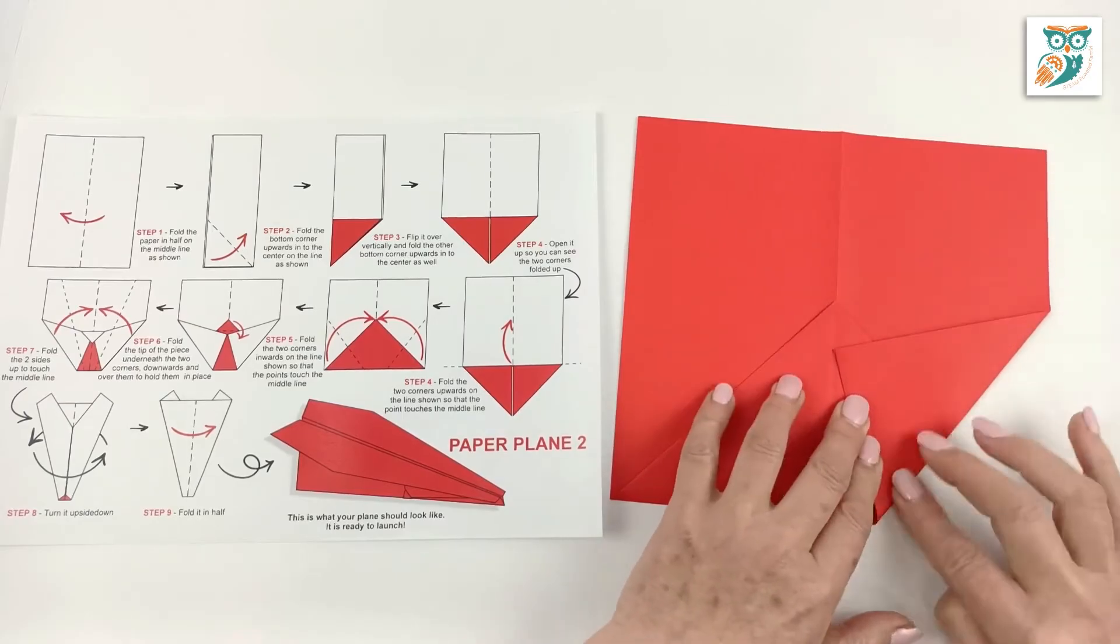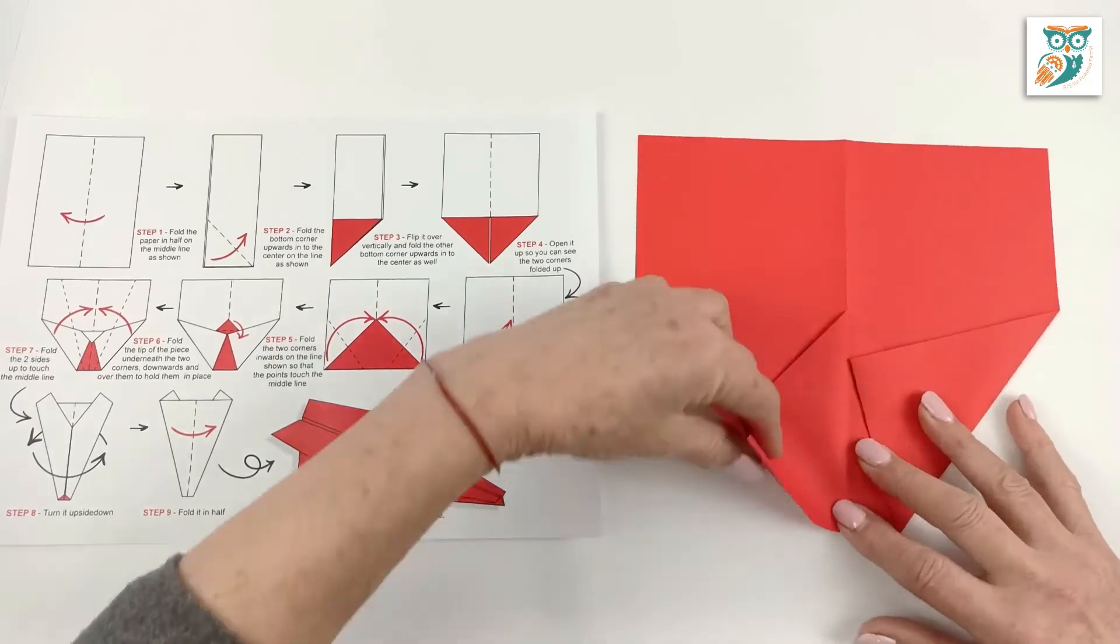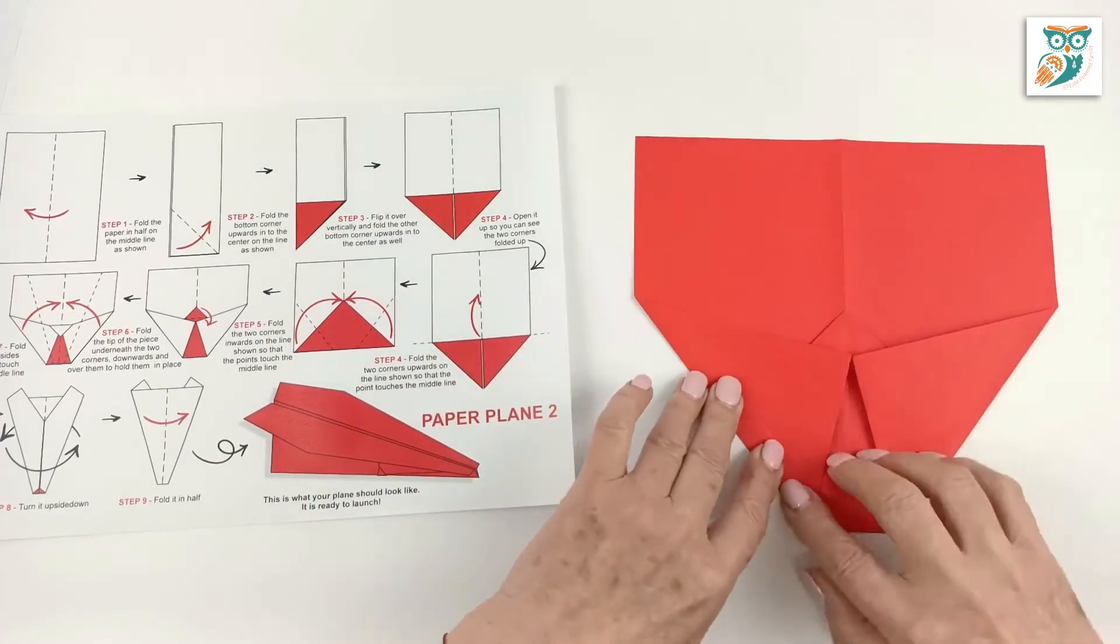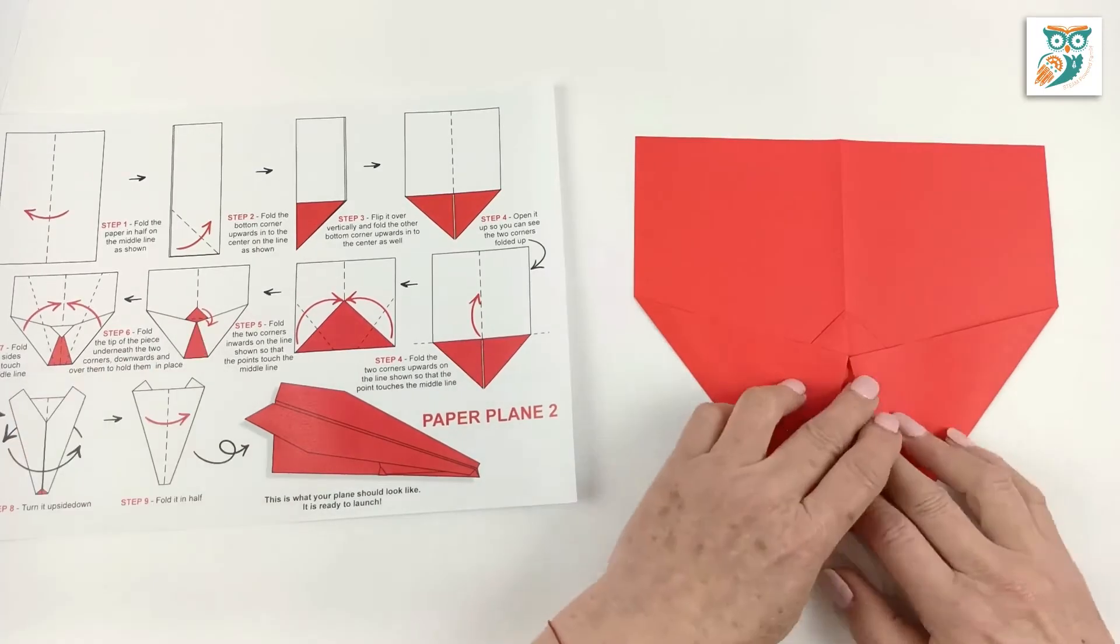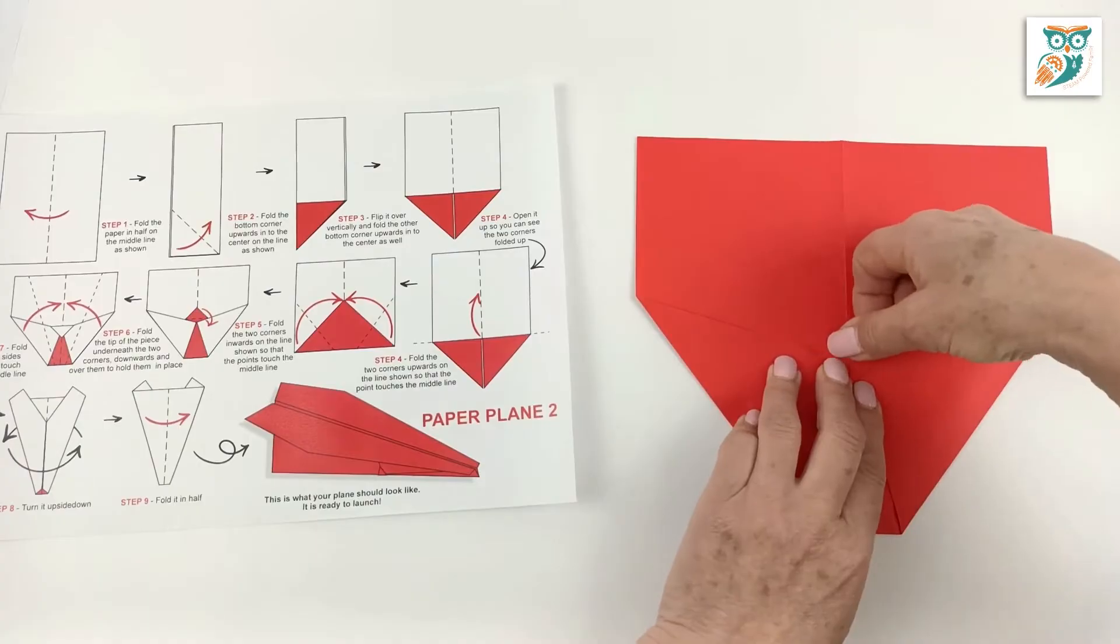Now grab each corner and we're going to fold it in just so the point comes in. You'll notice we're at a little bit of an oblique angle here. We want those two points to come in and touch on that center line. And that will leave us a little flat edge on the nose. Now grab that little triangle that's popping out of the top there and fold that in.